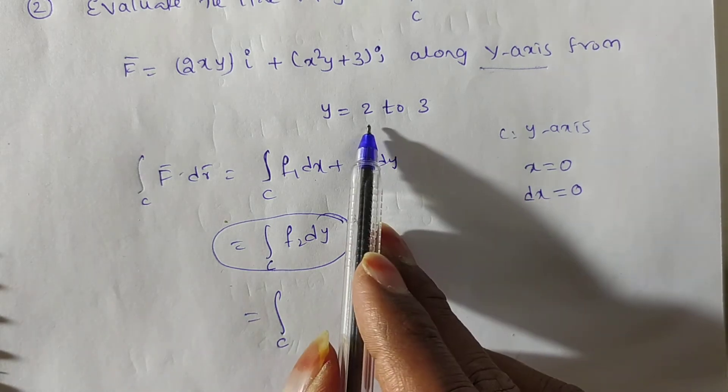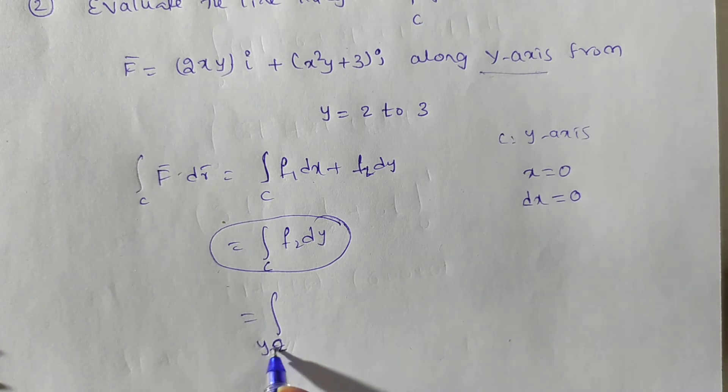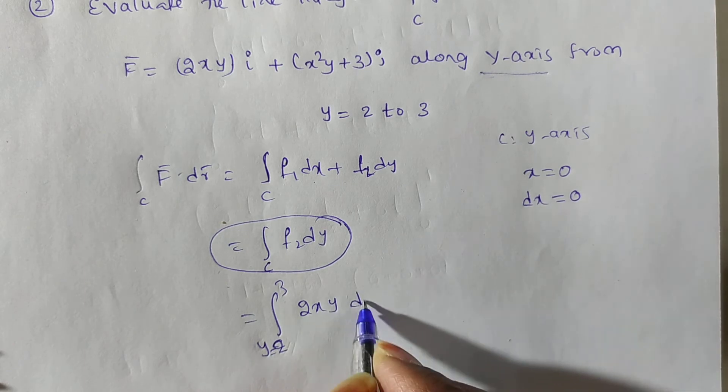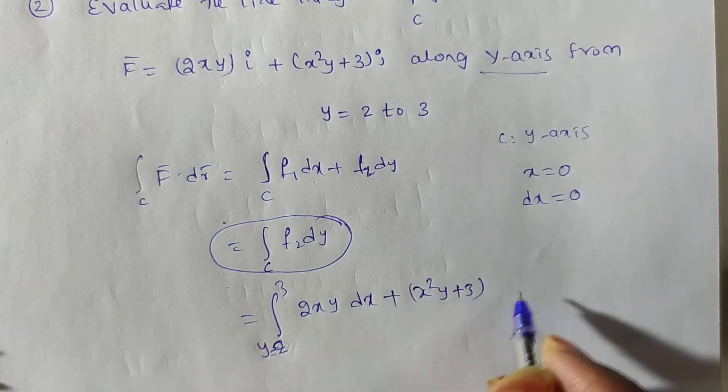Now, integral over C. What is the C here? y=2 to 3. Limits of C is here, y=2 to 3. So integral y is from 2 to 3: 2xy dx plus (x²y+3)dy.